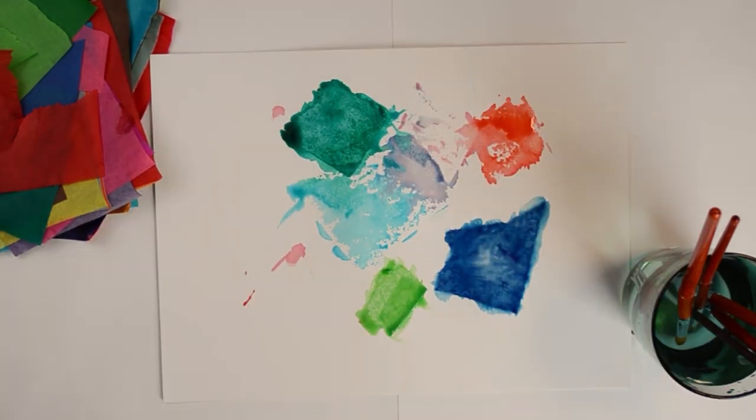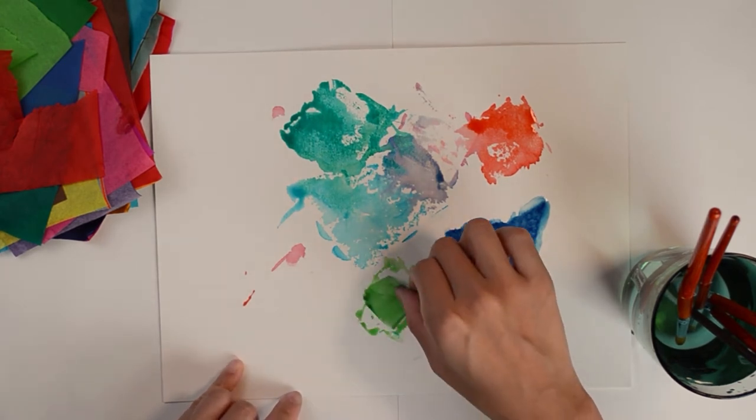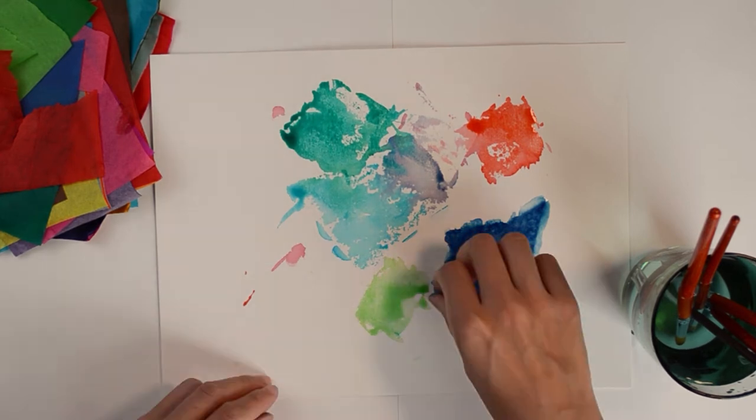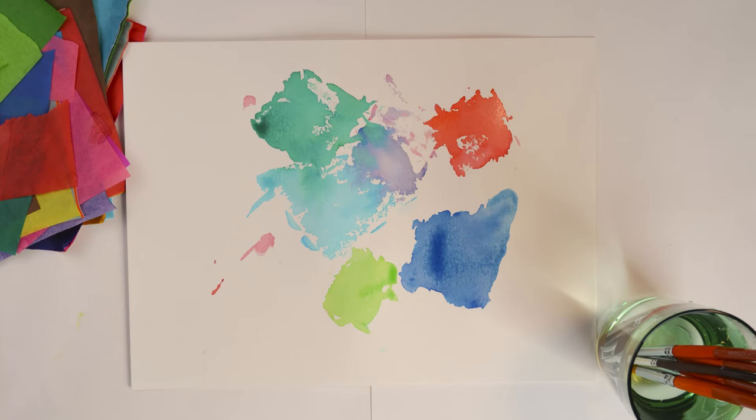Some tissue paper may be too thick to seep colors onto the paper. In this case, you can pick it up, turn it over, and put it back down to color the paper. This material is easy to use and creates an unexpected and fluid effect.